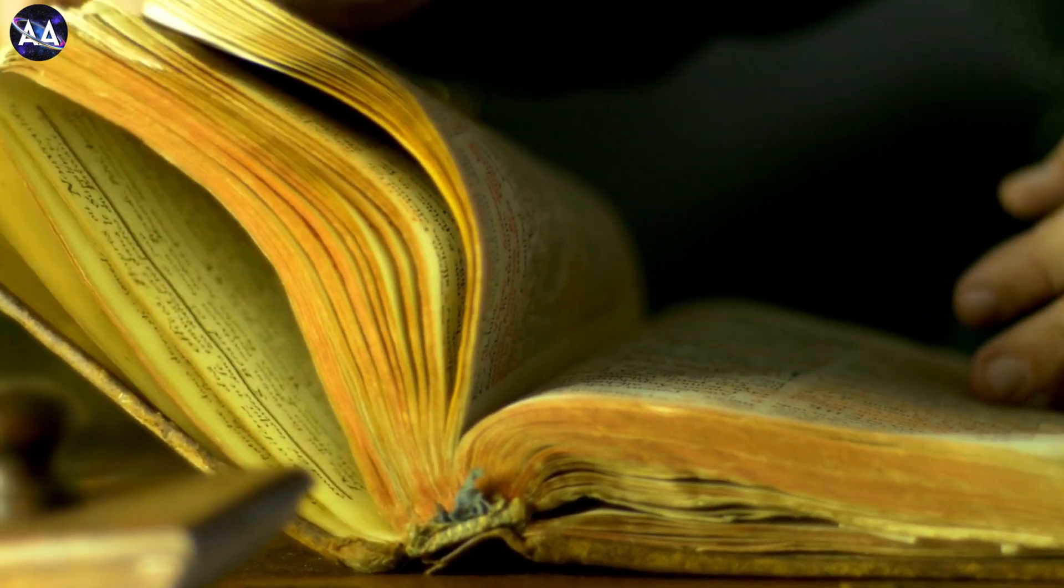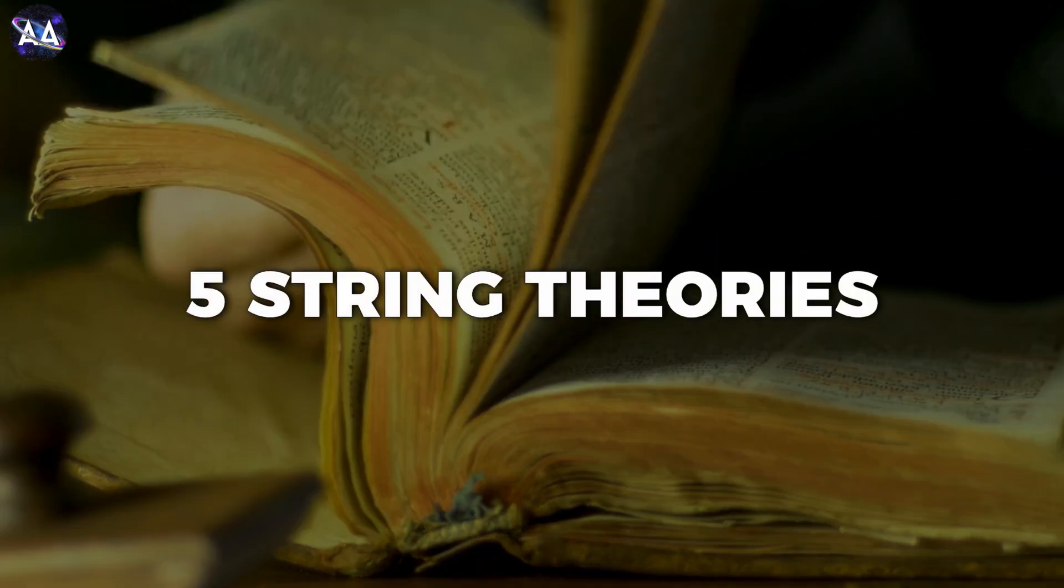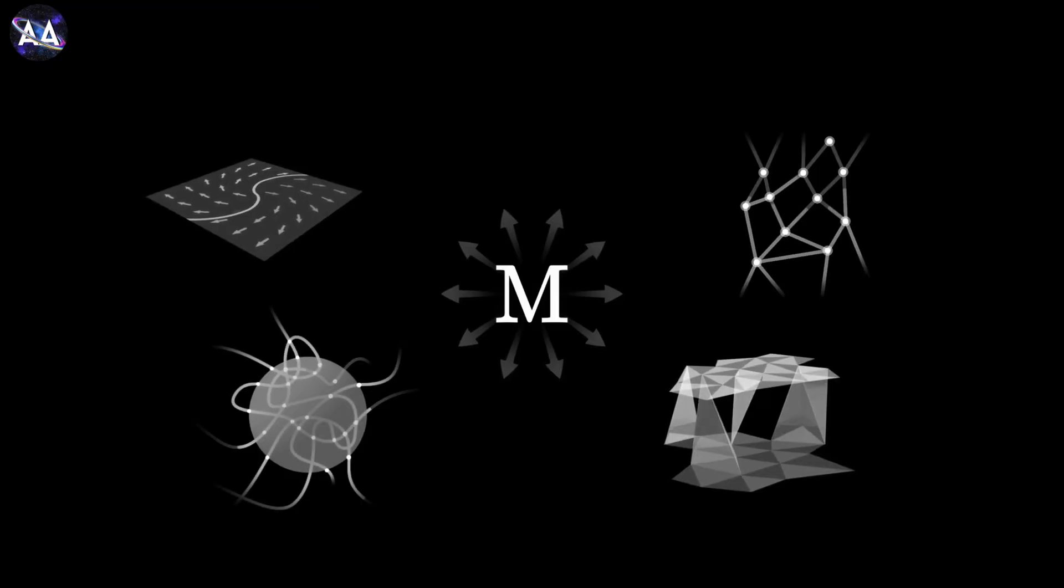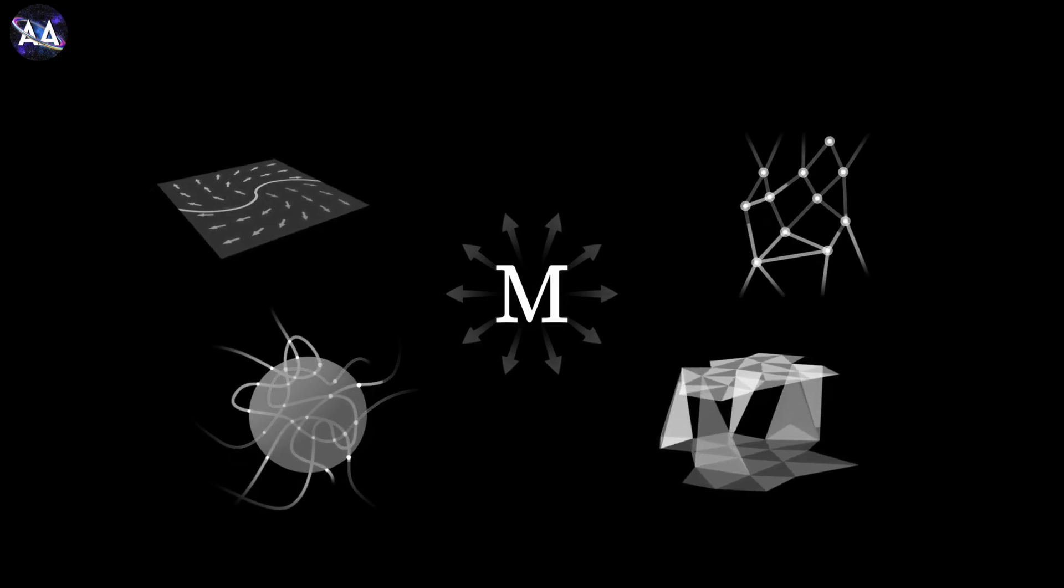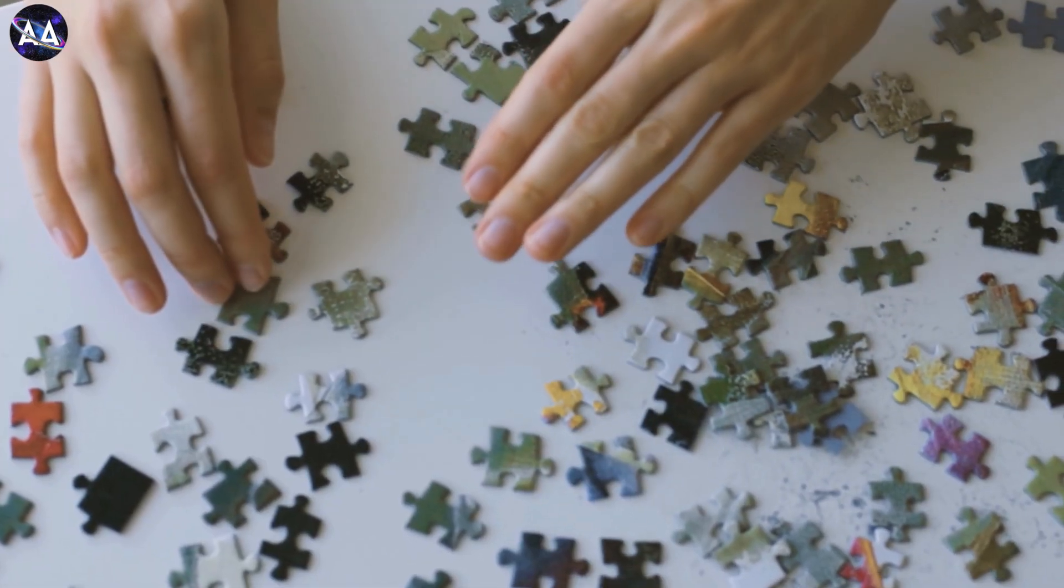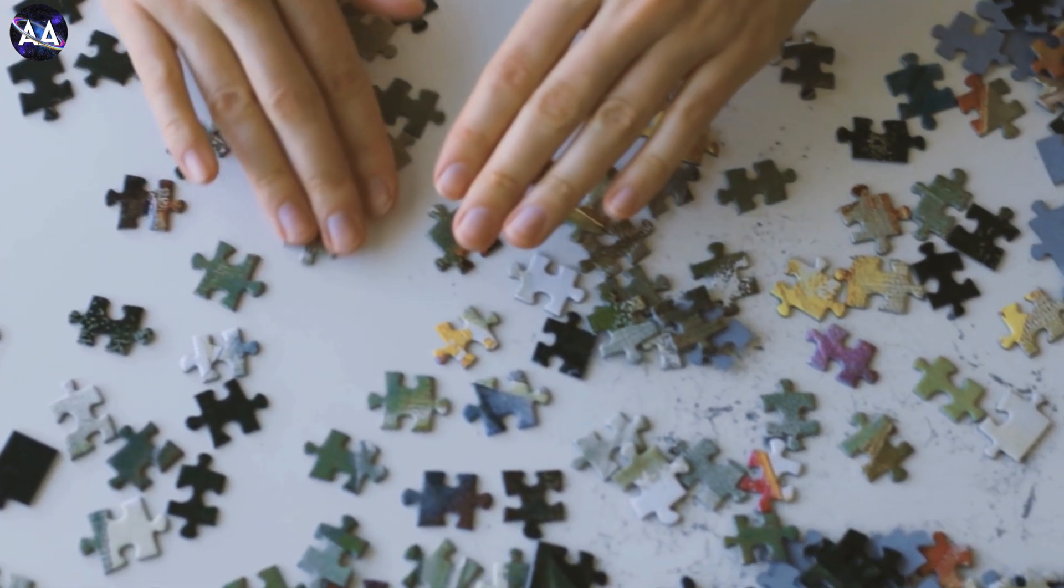But there's a twist. By the 1980s, physicists had developed not one, but five different string theories. Each seemed to work on its own, but they couldn't all be correct. It was like finding five puzzle pieces that didn't quite fit together.